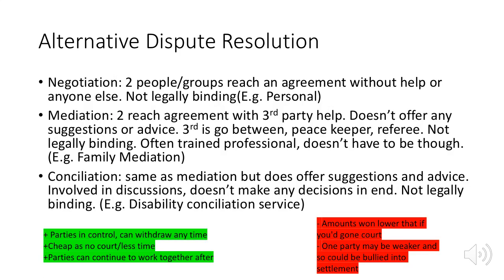Another type of ADR is negotiation, where two people or groups reach an agreement without help from anyone else. These decisions are not legally binding. Another type is mediation, where two parties reach an agreement with the help of a third party who doesn't offer any suggestions or advice — the third party is really a go-between or peacekeeper. It's not legally binding; the mediator is often a trained professional, but doesn't have to be. Then you've got conciliation, which is the same as mediation but the third party does offer suggestions and advice and can be involved in discussions, though they don't make the final decision. It's also not legally binding.